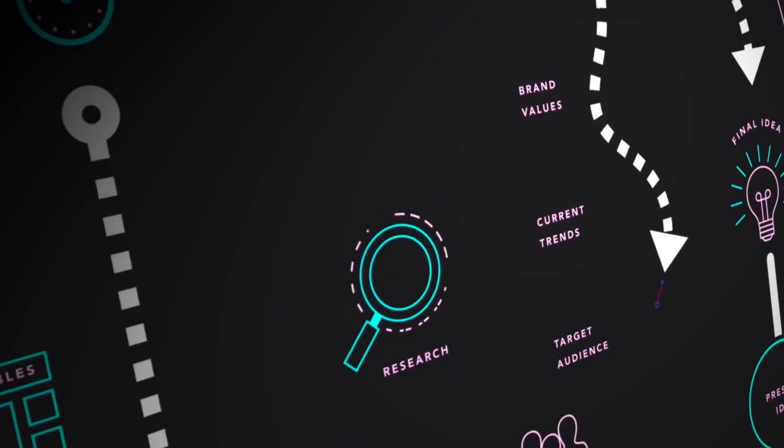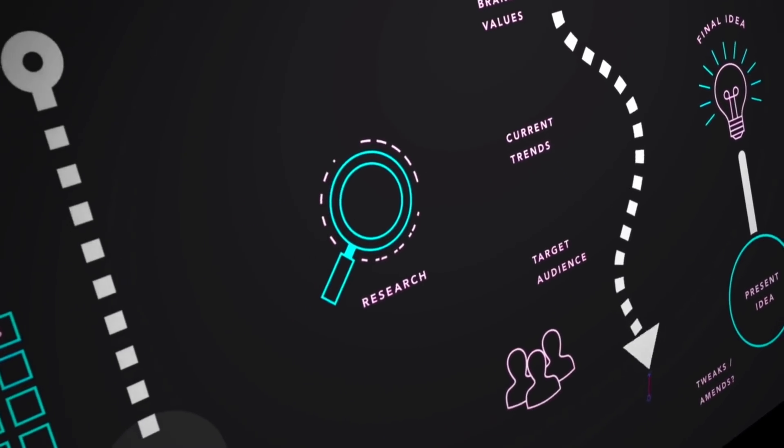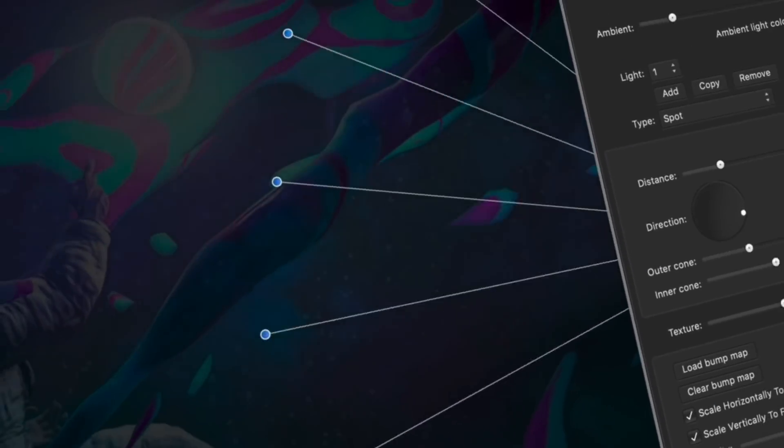On to Affinity Designer: we're getting arrowheads, the HDR/EDR improvements from Photo, some node tool improvements, the ability to make multiple strokes and fills on a single shape, PSD import/export improvements, the sub-pixel brush from Photo, and 32-point symmetry. It's interesting to see a lot of these updates come across apps consistently — unlike Adobe, where a feature rolls out for Photoshop but takes years to reach Illustrator.